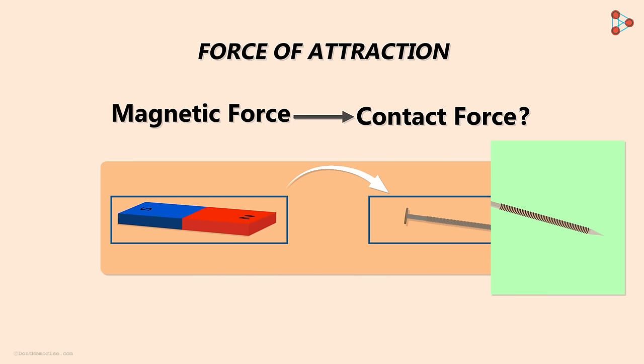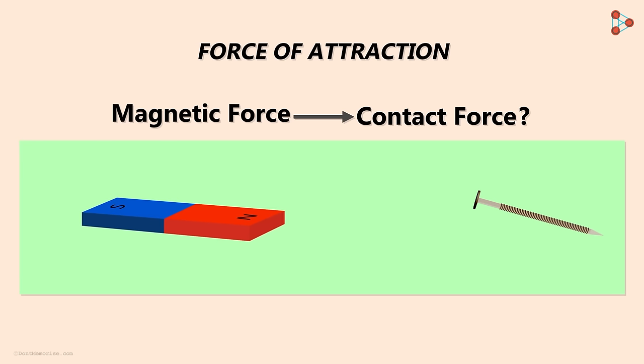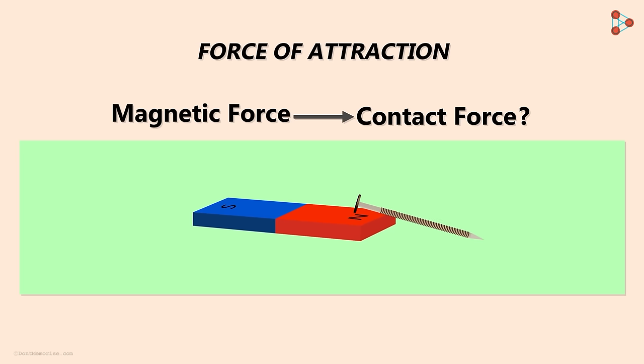Let's look at the animation in slow motion. We are moving the magnet towards the nail. And at this point, the nail also begins to move towards the magnet.